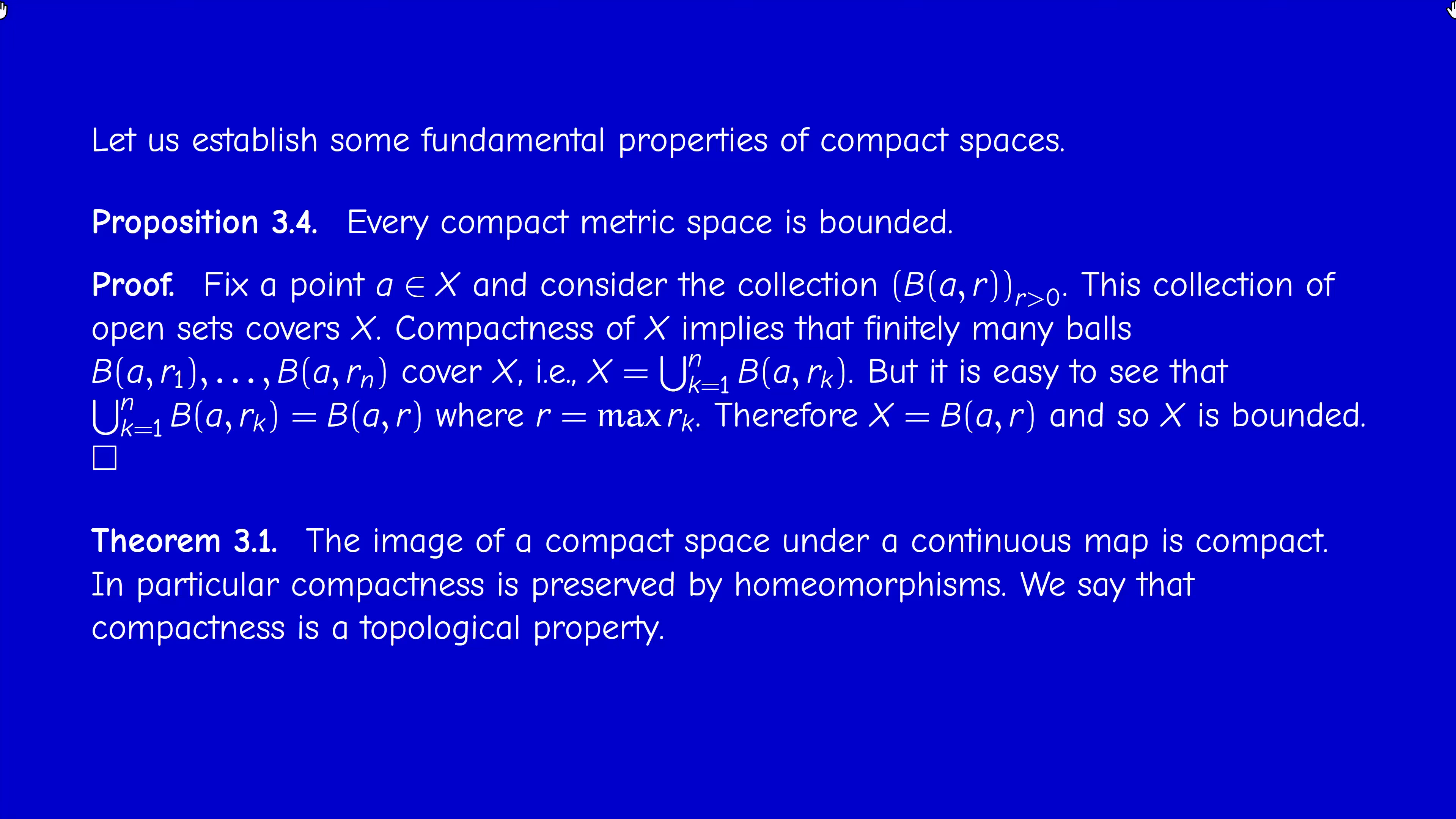Next result, very important, fundamental. The image of a compact space under a continuous map is compact. This does not depend on the concept of distance. So this is true for any topological space. Compactness is conserved by continuity. So in particular, it's conserved by homeomorphisms.